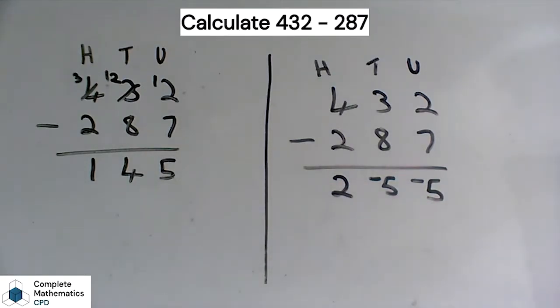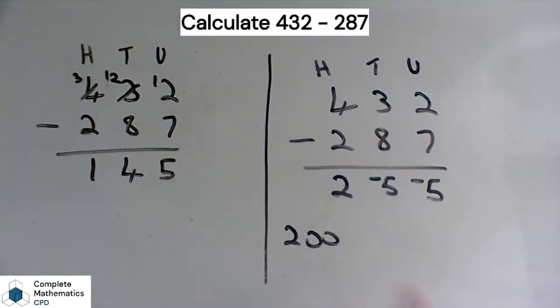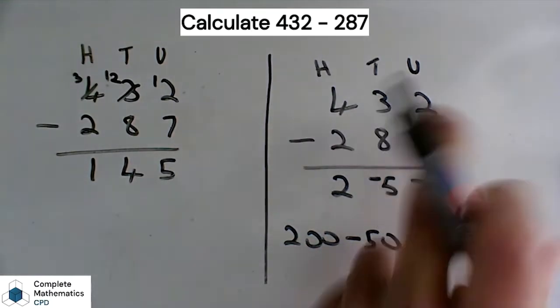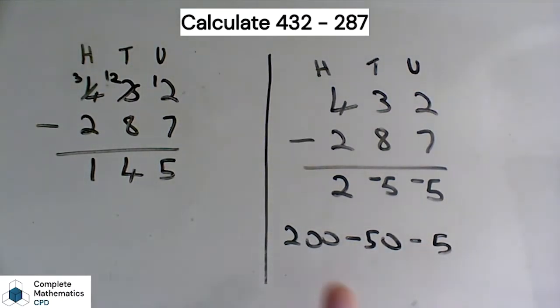But if you actually think and break down what this actually means in terms of our place values, we've got positive 200, then we've got negative 5 tens or minus 50, and then here we've got negative 5 units or minus 5. And if we work out this calculation, 200 minus 50 is 150, minus 5 is 145.